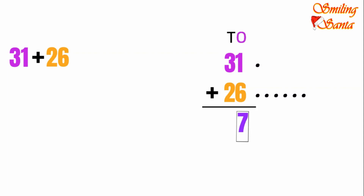Now let's add the numbers in the tens place. Three and two are in the tens place. Let's add them. We will put three dots — one, two, three. Then we will put two more dots — one, two. Count them together: one, two, three, four, five. We are adding the numbers in the tens place, so we will put the answer in the tens place. So 57 is our sum. 31 plus 26 gives us 57 as the sum.